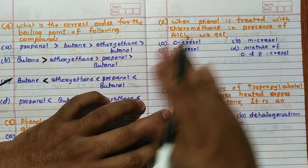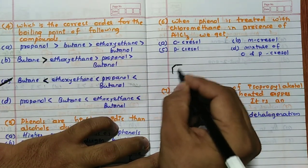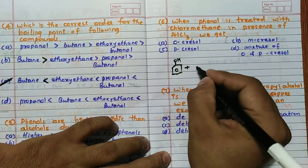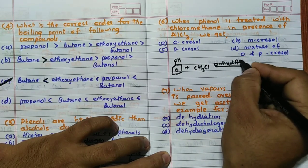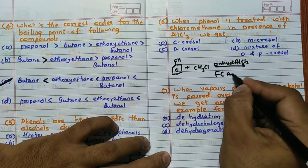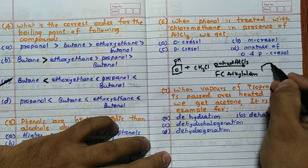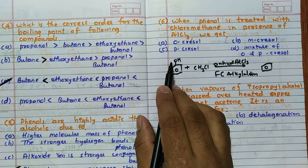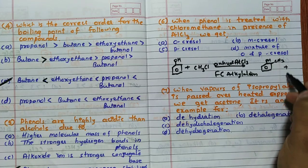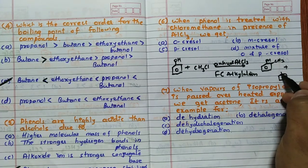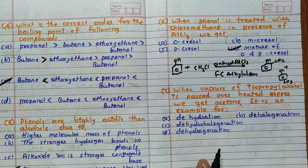Then when phenol is treated with chloromethane in presence of AlCl3, we will get. See, phenol is treated with chloromethane, CH3Cl in presence of anhydrous AlCl3. So this is nothing but Friedel-Craft's alkylation reaction. So you are going to get - this is electron donating group, correct? Ortho and para product you are going to get. So OH here and CS3 here. This is called as ortho cresol. And you are going to get the compound OH here and para position CS3, it is called as para cresol. Hence the answer for this question is D.